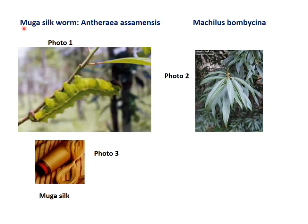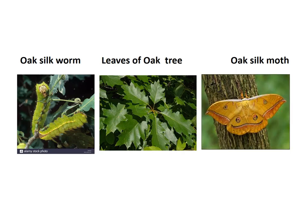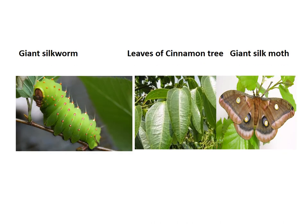This slide depicts the photograph of Muga silkworm Antheraea assamensis, food plant Machilus bombicina, and Muga silk. The next slide shows Oak silkworm Antheraea pernyi, leaves of oak tree, and oak silk moth. This slide depicts the photograph of Aina silkworm Attacus atlas, leaves of cinnamon tree, and Aina silkworm moth.